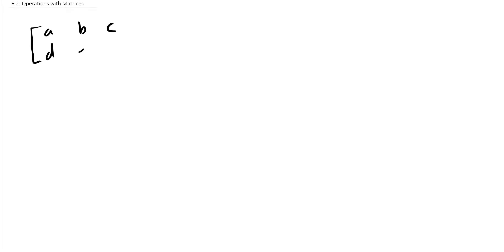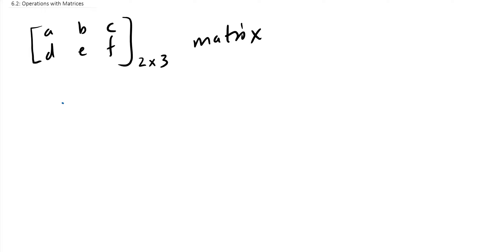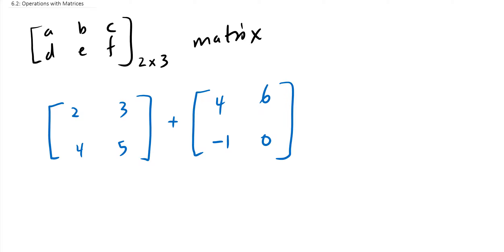To start, recall a matrix like [a, b, c; d, e, f] — a two-by-three matrix. If we're given two different matrices, say [2, 4; 3, 5] and [4, -1; 6, 0], and asked to add them, the first and very important thing to know is we can only add matrices if they have the same number of rows and the same number of columns. For example, you cannot add a two-by-three matrix to a four-by-six matrix — they must have matching dimensions.